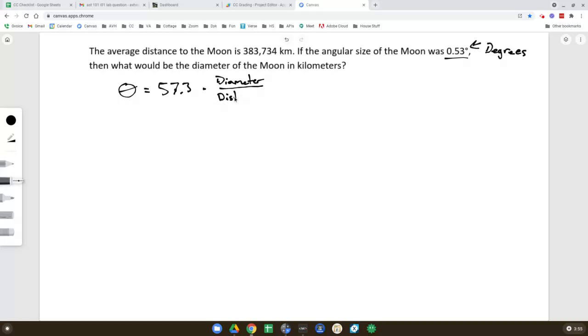And in this case, we are given the angular size. We're told that theta equals 0.53 degrees. And we are given the distance. Distance equals 383,734 kilometers.